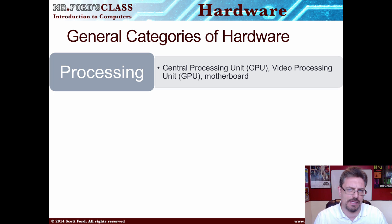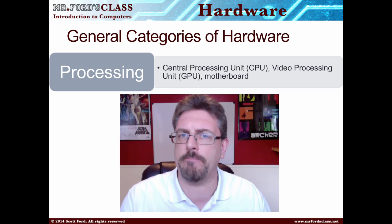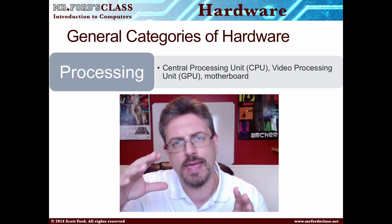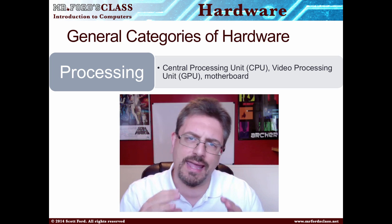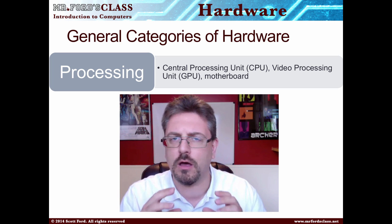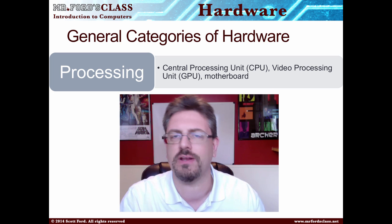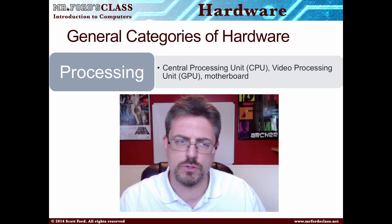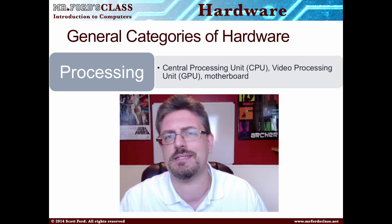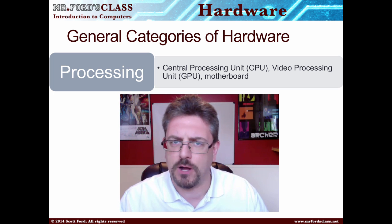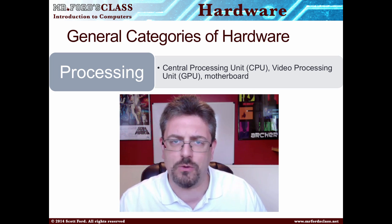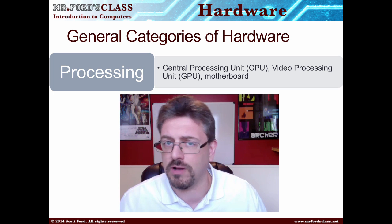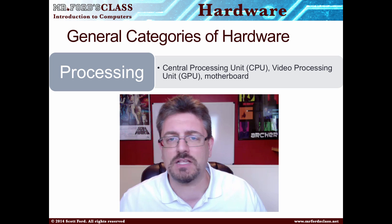Breaking down the parts of the hardware: we have two big components of a computer, the hardware and the software. Looking at the hardware, we can break it down into several different categories. The very first one is processing. Parts you might find within the processing category are things like your central processing unit — your CPU — your video processing unit, your GPU, as well as your motherboard.